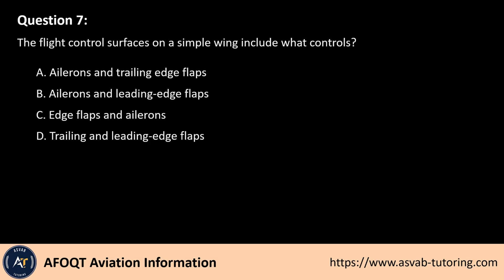Question 7. The flight control surfaces on a simple wing include what controls? A. Ailerons and trailing edge flaps. B. Ailerons and leading edge flaps. C. Edge flaps and ailerons. D. Trailing and leading edge flaps.